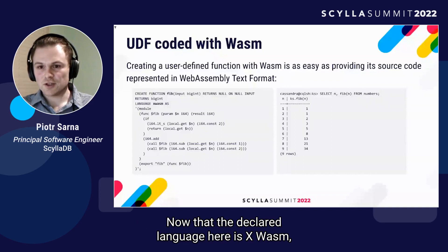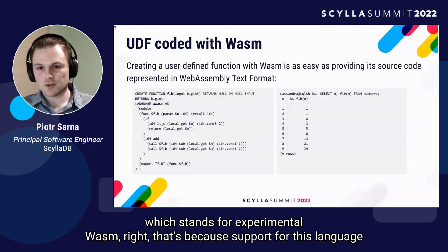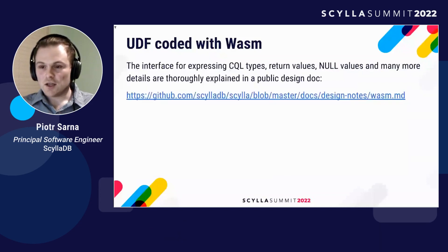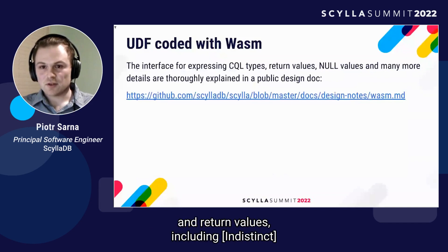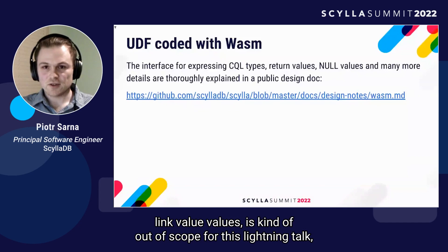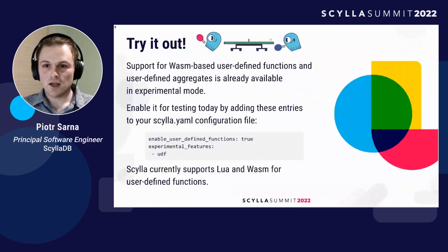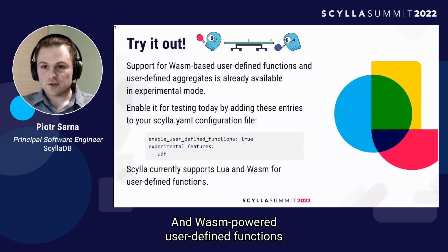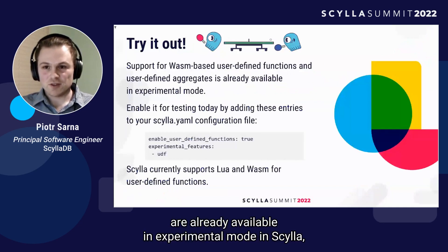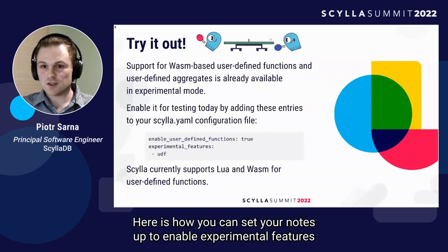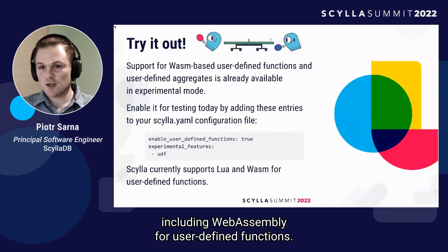Note that the declared language here is 'xwasm', which stands for experimental WASM, because support for this language is currently still experimental in Scylla. The exact interface for expressing types and return values, including handling null values, is out of scope for this lightning talk, but there's a design document I recommend everyone read explaining all the specific choices. WASM-powered user-defined functions are already available in experimental mode in Scylla, so don't hesitate to spin up a test cluster and try it out. Here's how you can set your nodes up to enable experimental features including WebAssembly for user-defined functions.